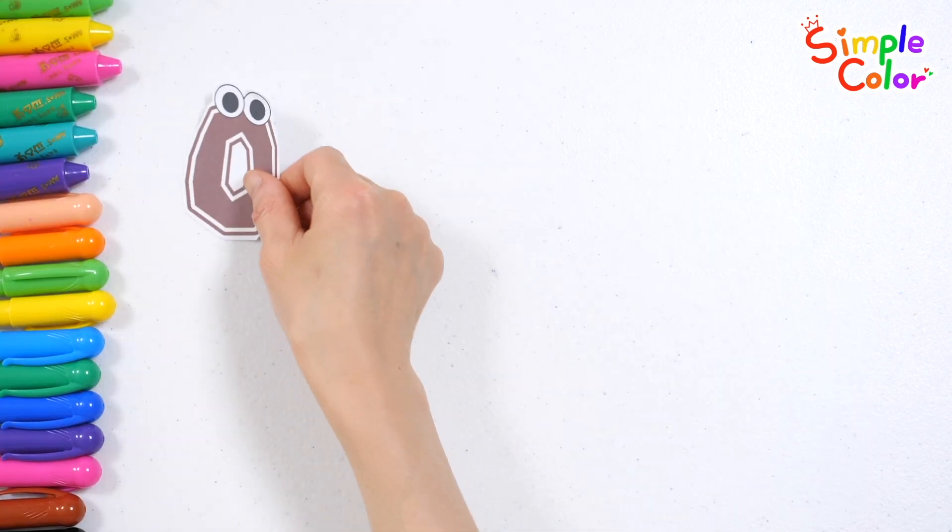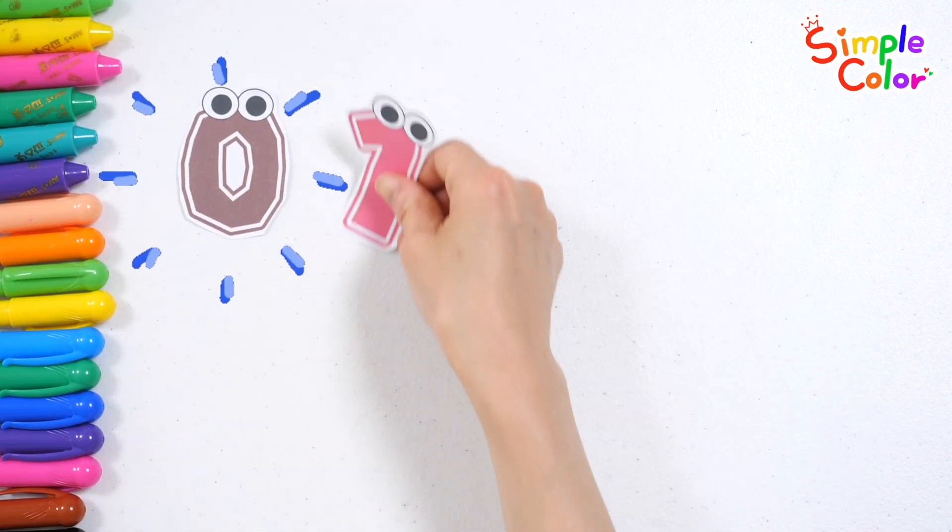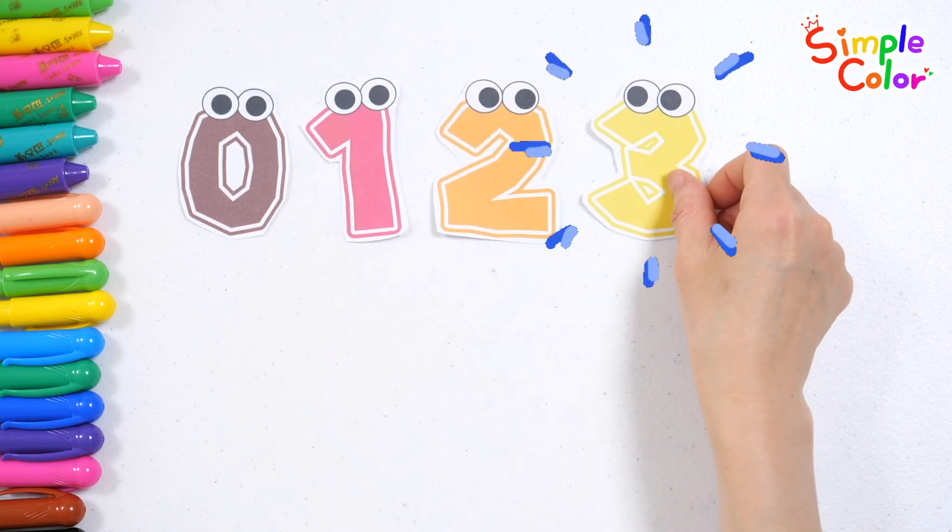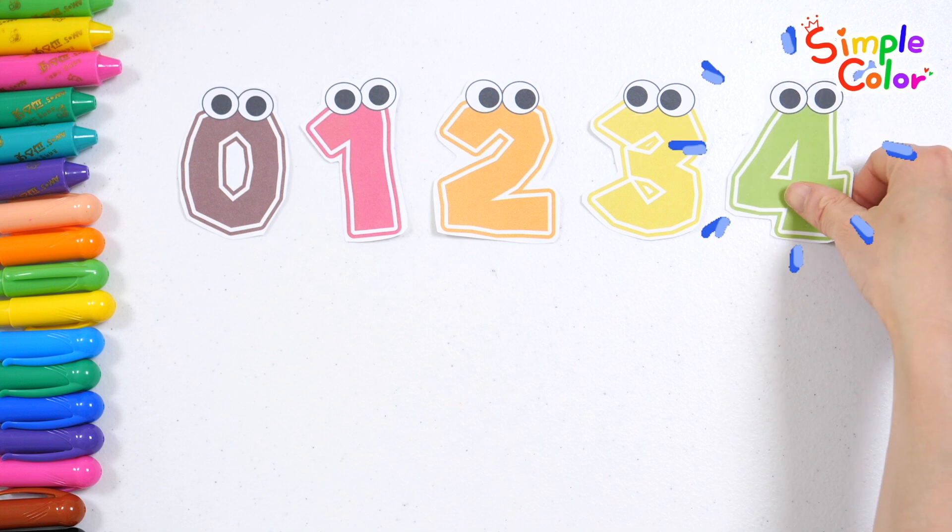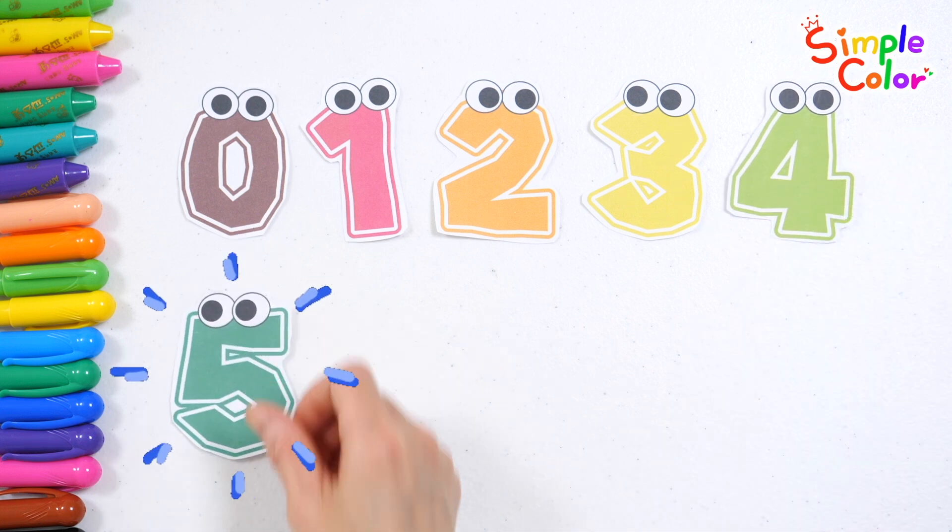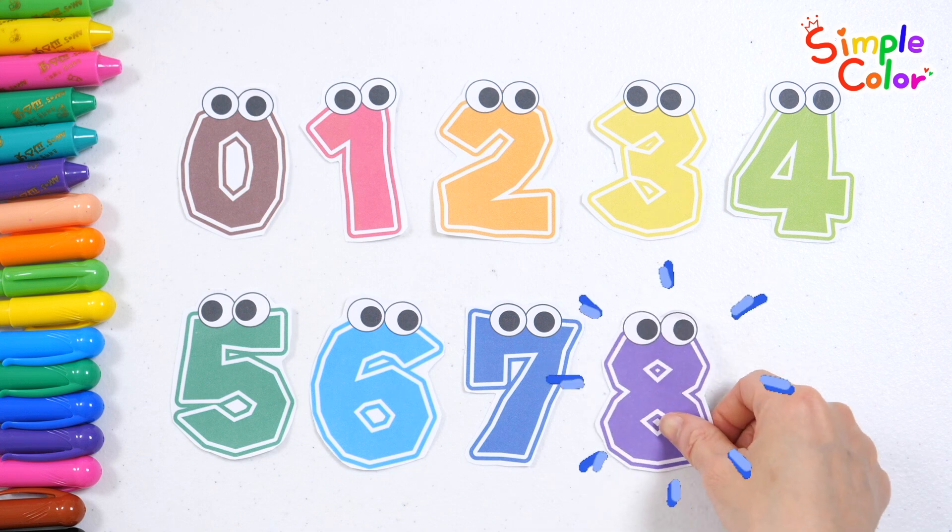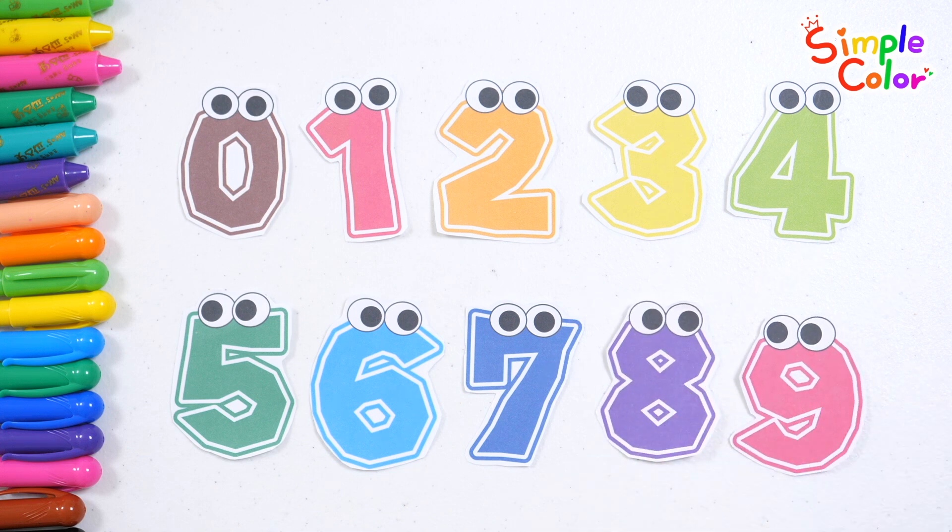Shall we read the numbers one by one? Zero. One. Two. Three. Four. Five. Six. Seven. Eight. Nine. Good job!